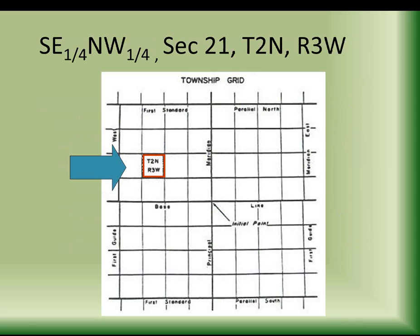Let's say your property description is: the southeast one quarter of the northwest one quarter, section 21, township 2 north, range 3 west. You want to find that in a plat book — a graphical description of property ownership within a township. To find it, you start from the big units and work your way down to get to the right pages within the plat book.